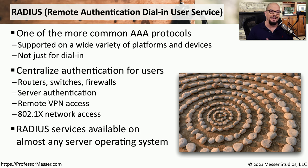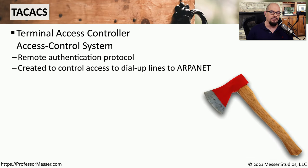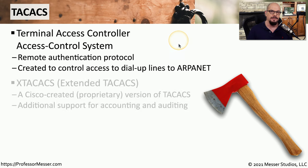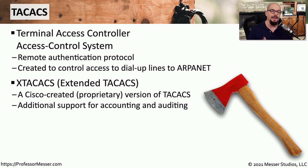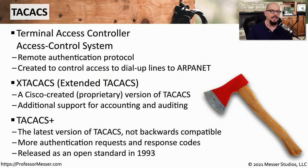There are RADIUS services available for practically any operating system, which is why you'll find RADIUS running somewhere in most enterprise networks. As an alternative to RADIUS, you might use TACACS+, the Terminal Access Controller Access Control System. It is a remote authentication protocol originally built for dial-up lines. Cisco updated it into Extended TACACS+, adding support for accounting and auditing. Today, TACACS+ Plus is the latest version — an open standard released in 1993 — and is still very commonly used on Cisco devices.